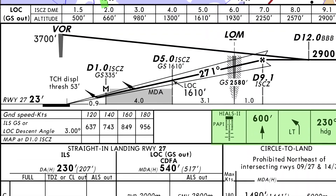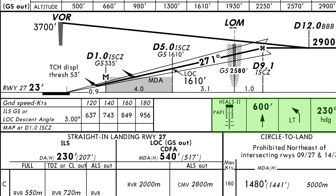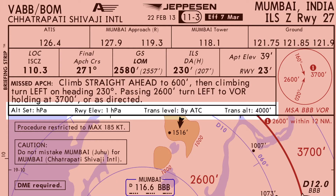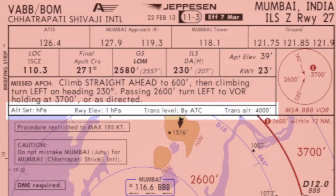The next row is for barometric settings. The barometer setting for this approach should be hectopascal. Some countries fly on the inches of mercury setting, however here it is HPA. The runway elevation is also given in hectopascal. The transition level will be informed by the ATC and the transition altitude is 4,000 feet.